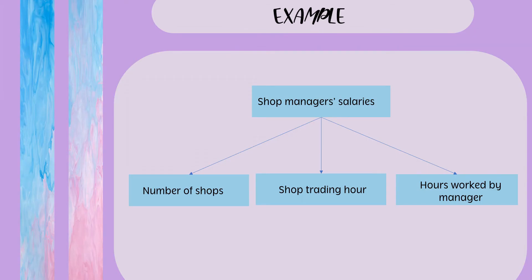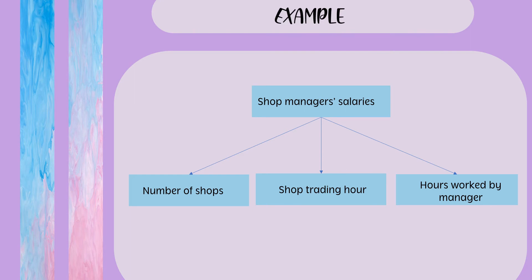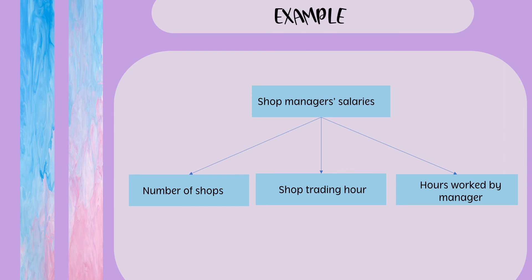The last example is the shop manager's salary. There are three possible cost drivers: the number of shops, the shop trading hours or opening time, and the hours worked by the manager. The salary cost can be influenced by any of these factors, and as mentioned earlier, it depends on the manager to choose and acknowledge the best cost driver for each cost in the company.